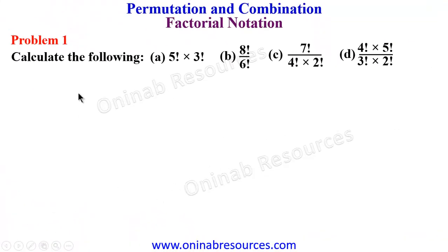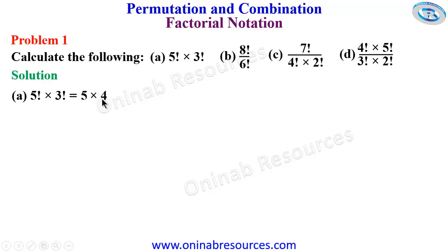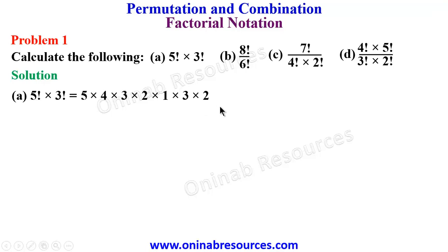Now we go to solve some problems. Problem 1: calculate the following — a) 5 factorial times 3 factorial; b) 8 factorial over 6 factorial; c) 7 factorial divided by 4 factorial times 2 factorial; d) 4 factorial times 5 factorial over 3 factorial times 2 factorial. Starting with part a: 5 factorial times 3 factorial expands as 5 times 4 times 3 times 2 times 1, times 3 times 2 times 1.